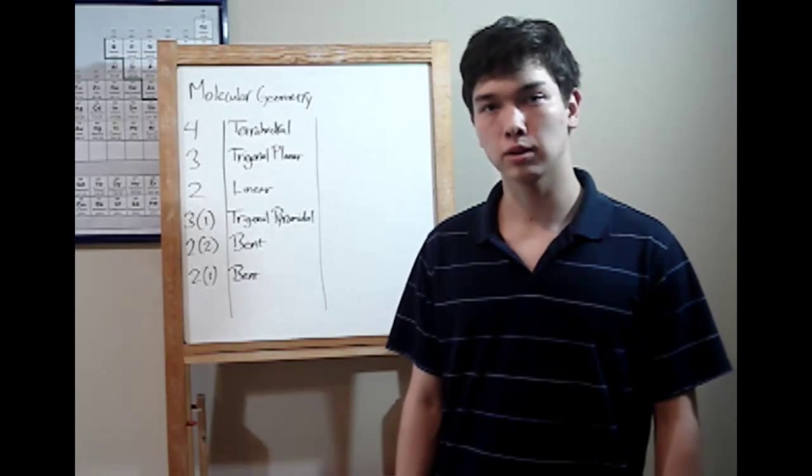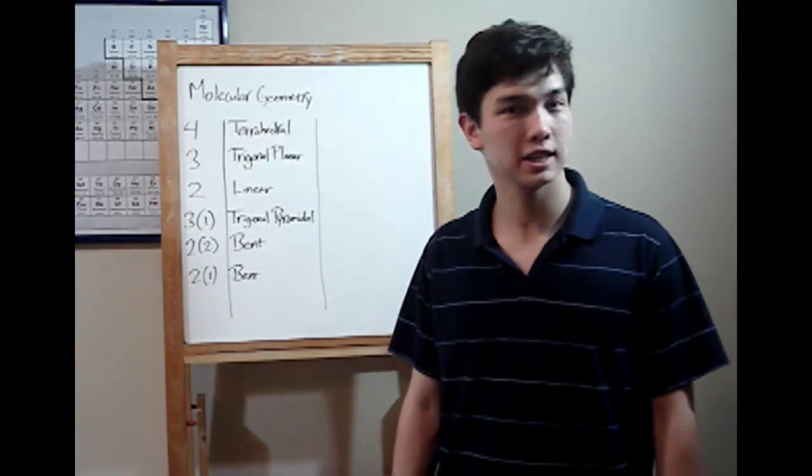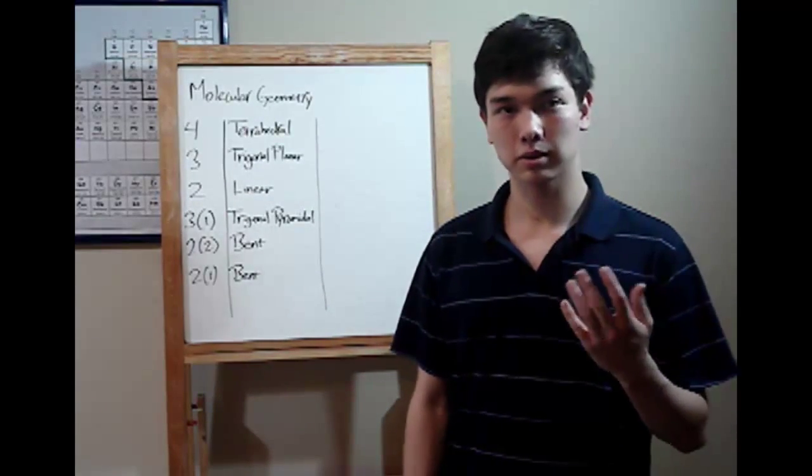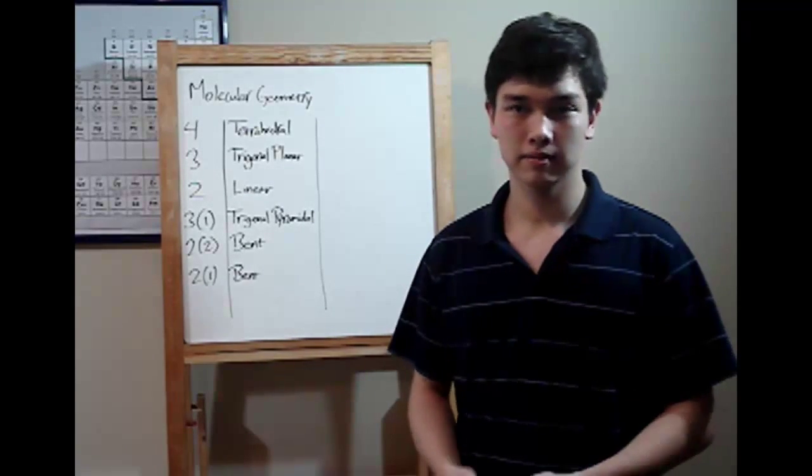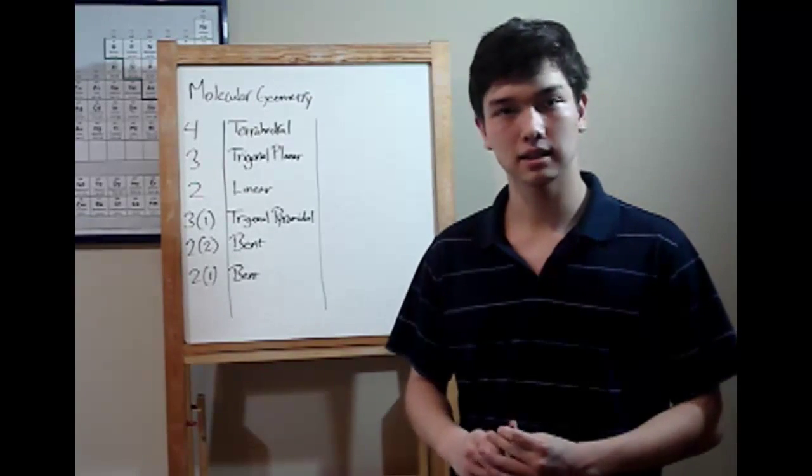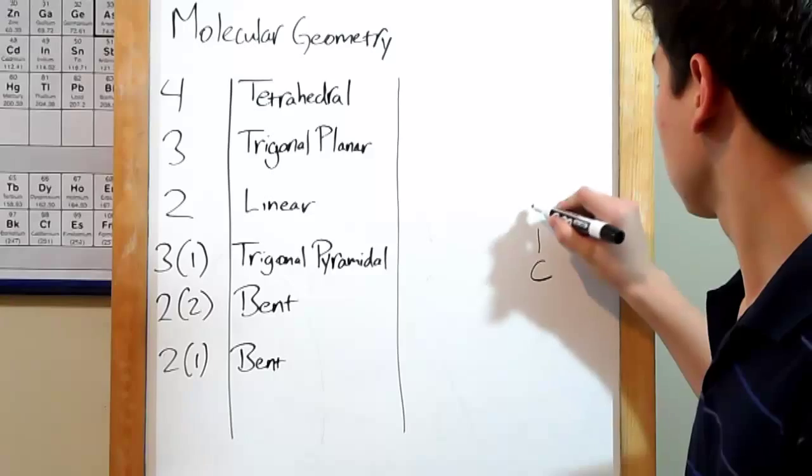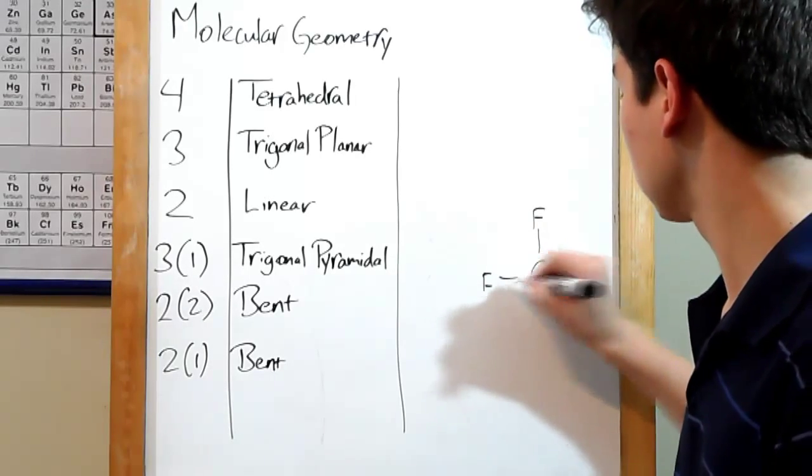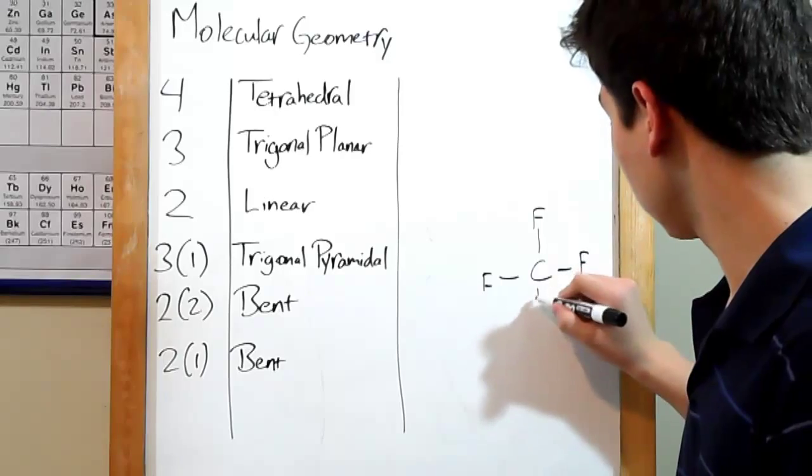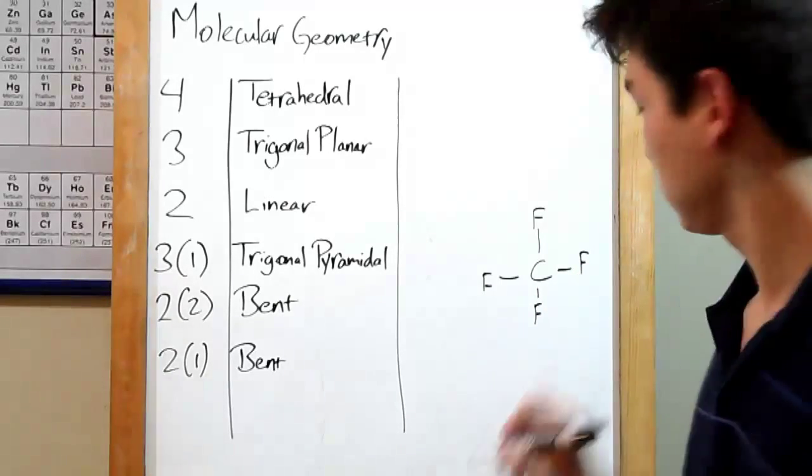Hi, I'm Brian Prier, tutoring high school chemistry. Today's topic is molecular geometry. So we've already worked with covalent bonding, and we know that non-metals can bond together, and sometimes more than one at a time, like carbon tetrafluoride, which is carbon bonded to four Fs at the same time, CF4.